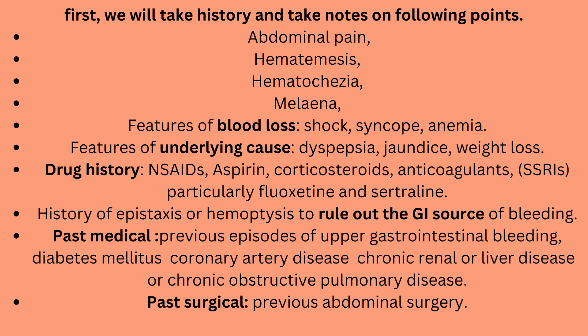Features of the underlying cause include dyspepsia, jaundice, and weight loss. Drug history should cover NSAIDs, aspirin, corticosteroids, anticoagulants, and SSRIs — particularly fluoxetine and sertraline. History of epistaxis or hemoptysis should be taken to rule out a non-GI source of bleeding.